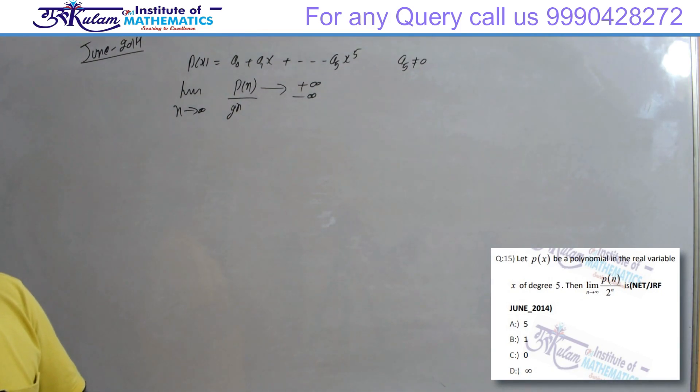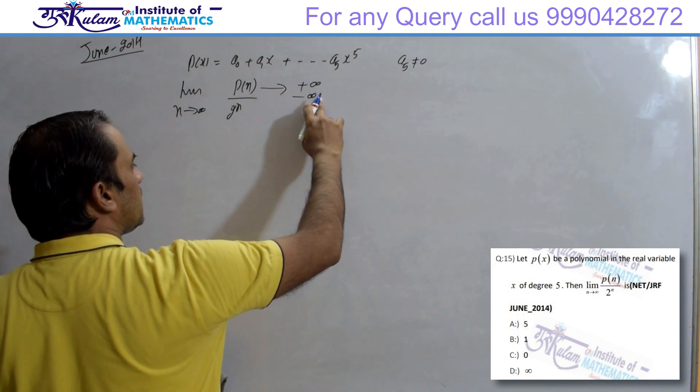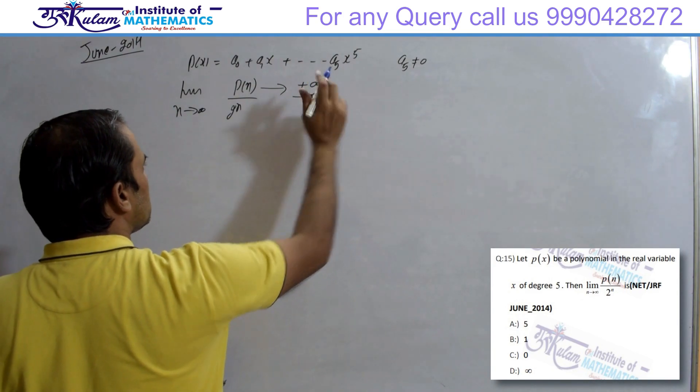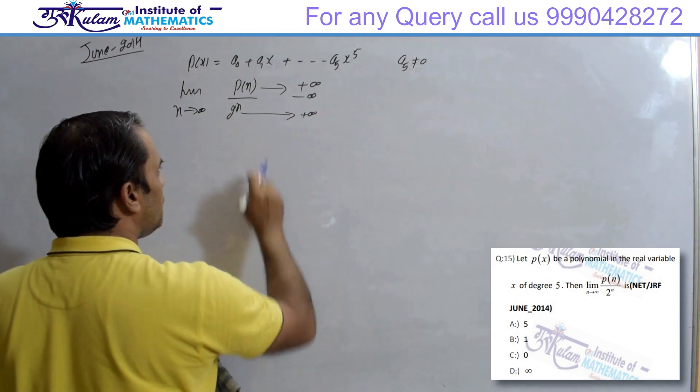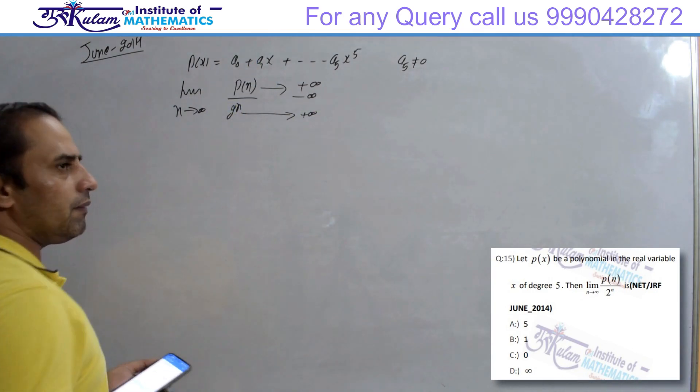5 degree की polynomial है, N tends to infinity पे, A5 अगर negative होगा तो ये quantity minus infinity पे, positive होगा तो plus infinity पे. और denominator quantity definitely कहां जा रही है? infinity पे. तो ये expression जो बन रहा है, वो infinity by infinity बन रहा है.